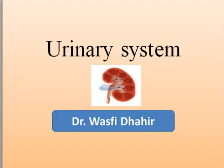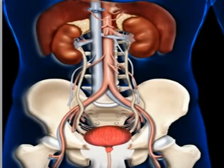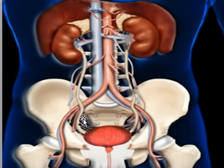Assalamu alaikum. Today I want to talk briefly about the anatomy of the urinary system. Anatomically, the urinary system is closely associated with the reproductive system, so they are often collectively called the urogenital system. The urinary system consists of six organs: two kidneys, two ureters, a urinary bladder, and finally the urethra.